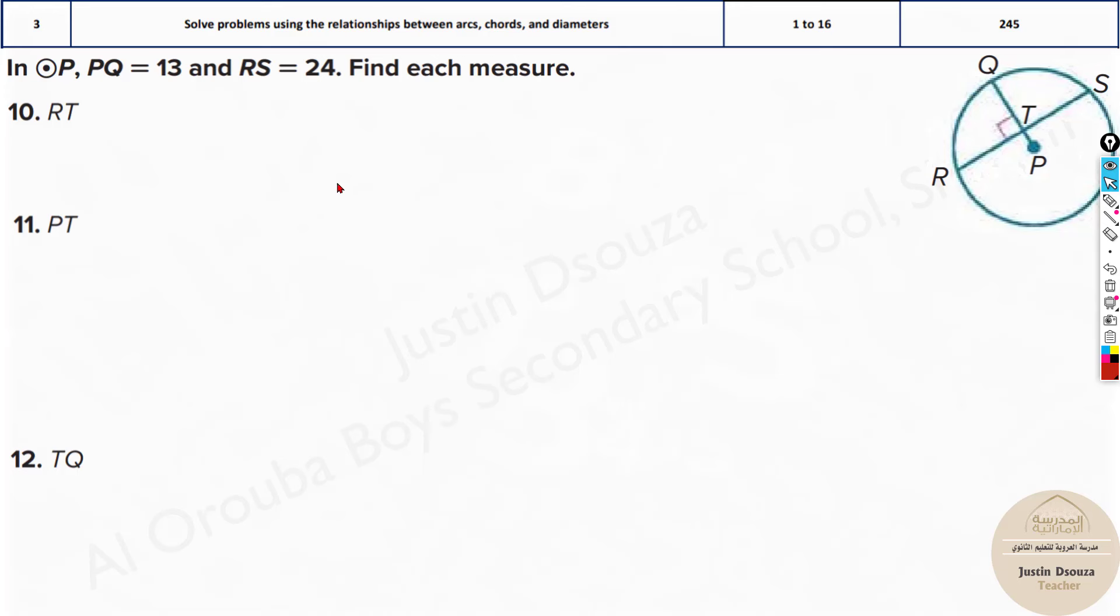Now we move to a little bit different type of problem. Here they have told PQ, this is the distance. The radius is given, and RS, it's not the diameter, this is just a chord, it's 24. We need to find the measures. What is RT? RT is this. So how would you solve it? We know RS, the total length is 24, and this radius is cutting at 90 degrees. It will cut this into congruent parts or equal parts, it bisects it. So it is 24 divided by 2, that will be 12 over here. That is RT. So that's it, very simple.